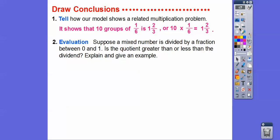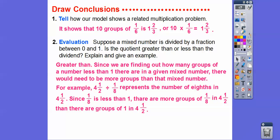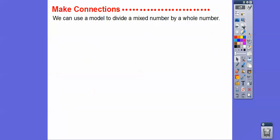And explain, well, it's definitely going to be greater than, you guys. Since we're finding out how many groups of a number less than 1 there are in a given mixed number, there would need to be more groups that are in that mixed number right there. So, for example, right here, if we had 4 and 1/2 divided by 1/8 right there, it represents the number of eighths in 4 and 1/2. And since 1/8 is less than 1, there's definitely more groups of 1/8 in 4 and 1/2 than there are groups of 1 in 4 and 1/2. I hope that makes sense.